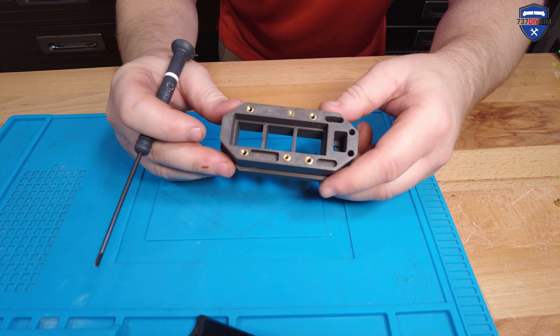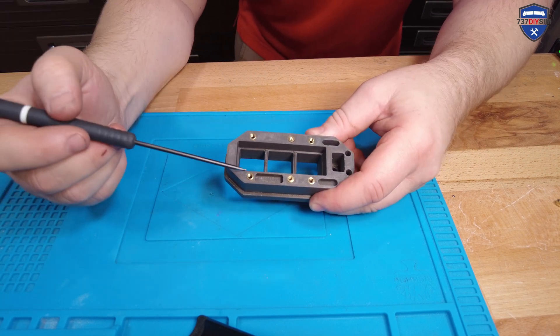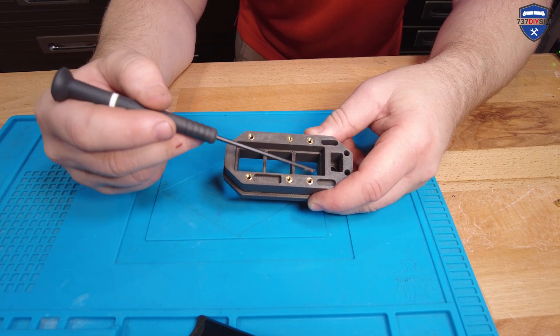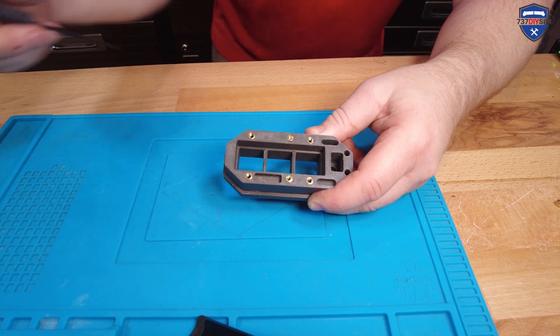And there we have it, that's the base unit with the thread inserts fitted. We've got the four M4 on the outer side and we've got two M3s in the middle.